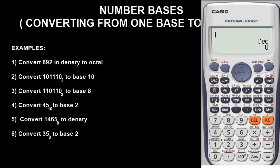So let's input the value. We have 692. Press enter. Right now this is the value in base 10. To convert it to base 8, which is octal, we press this button — when you look at it closely on your calculator, you will see OCT on top of it, so it stands for octal. We press the button and these values reflect.